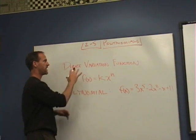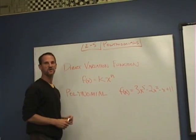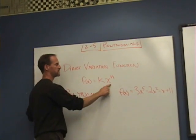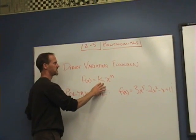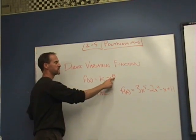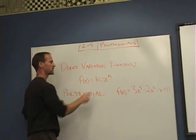I'm going to give you a list of five and we're going to decide which ones are and which ones aren't polynomials, based on the idea that it has to be a sum of direct variation functions in which k can be any number but x has to be raised to an integer value for n.